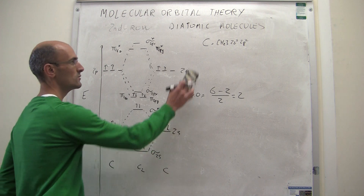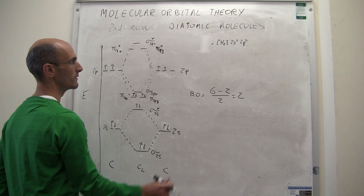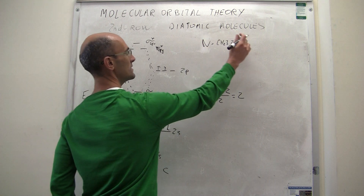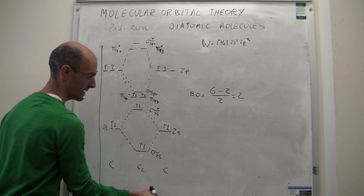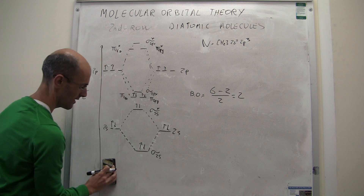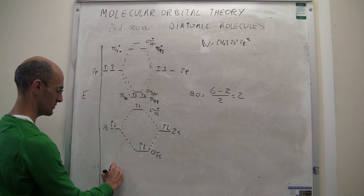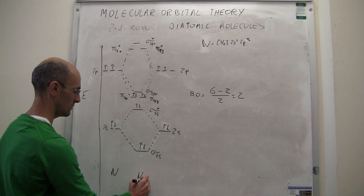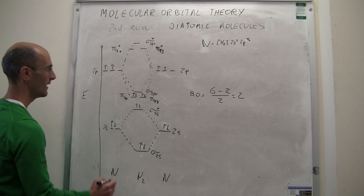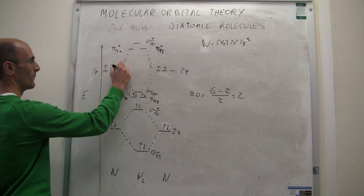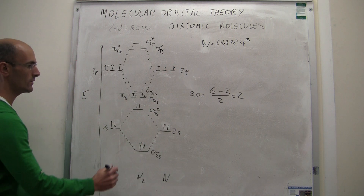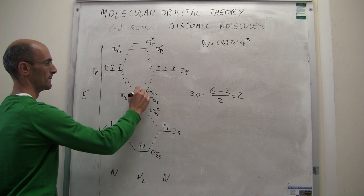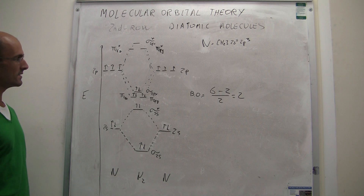We can continue and do nitrogen 2, and this is going to be pretty fast. The only thing that changes is that now you have one more electron per atom. When you come to this diagram, you write nitrogen, nitrogen 2, nitrogen, and then put one more electron in. The extra two electrons are just going to end up in this orbital. That is the molecular orbital diagram for nitrogen 2.